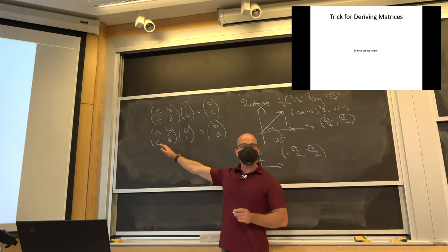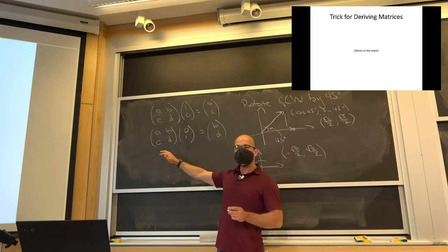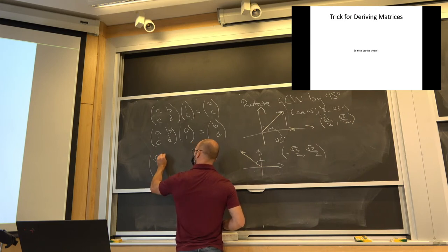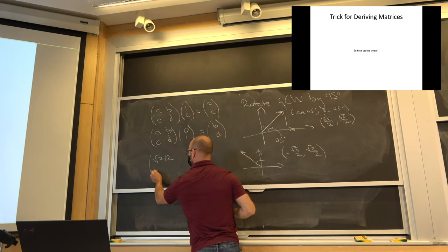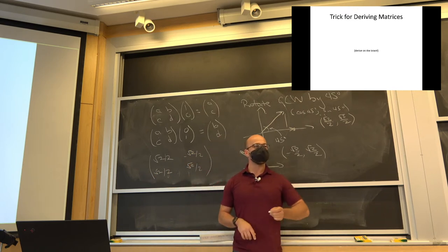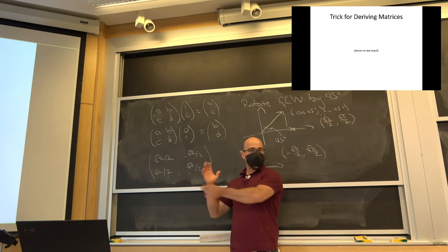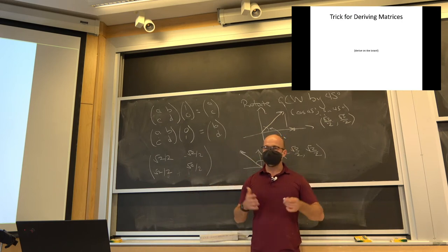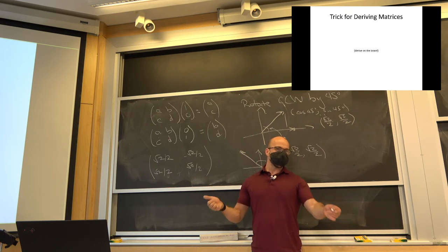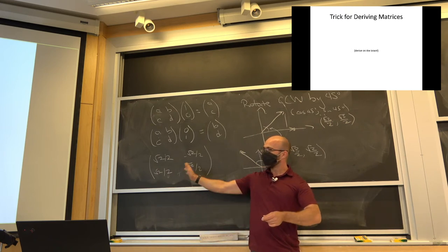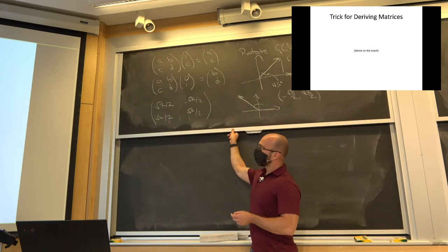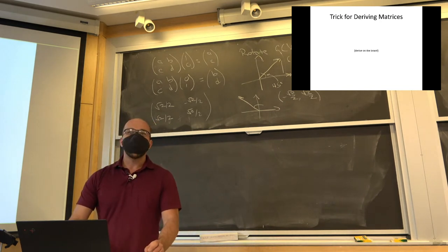Once I've drawn this picture, I know the action on the first and second standard basis vectors, so I just stick them together as columns of the matrix. The first column is cosine 45, sine 45 and the second column is negative sine 45, cosine 45. That's the rotation matrix. The first column is what the matrix does to the first standard basis vector; the second column is what it does to the second. You can draw those pictures and compose them — just a little mnemonic.